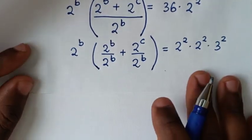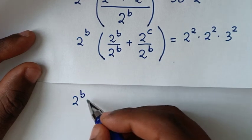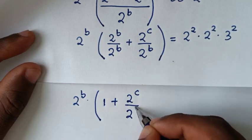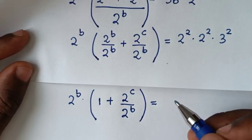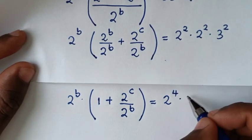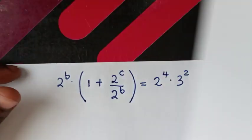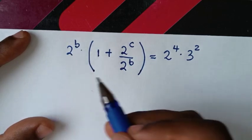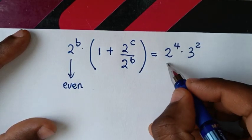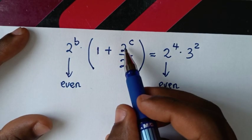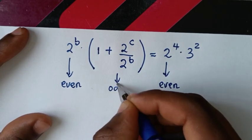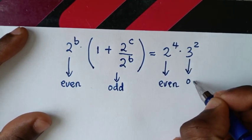Then in the next step, it will be 2 power b times: 2 power b divided by 2 power b is 1, plus 2 power c over 2 power b, bracket, is equal to 2 power 2 times 2 power 2, which is 2 power 4, times 3 power 2. We compare: 2 power b and 2 power 4 are even numbers. 2 power c over 2 power b has base of 2, so it is even; plus 1 is odd. So inside the bracket is odd, and 3 power 2 is also odd.